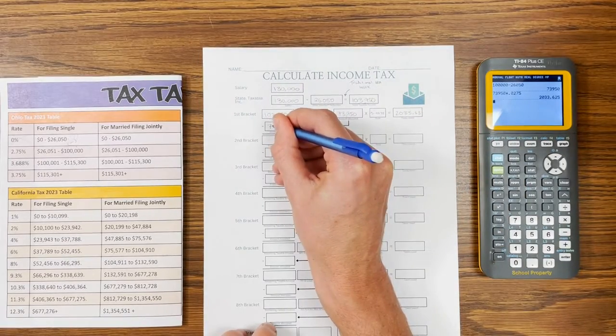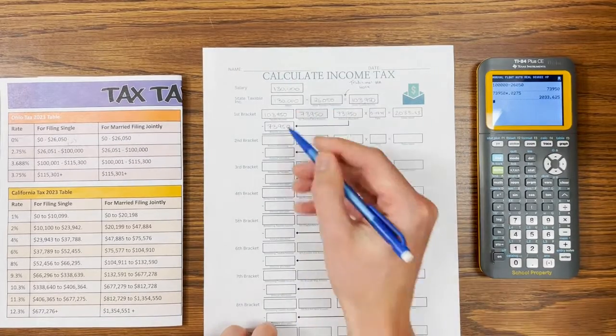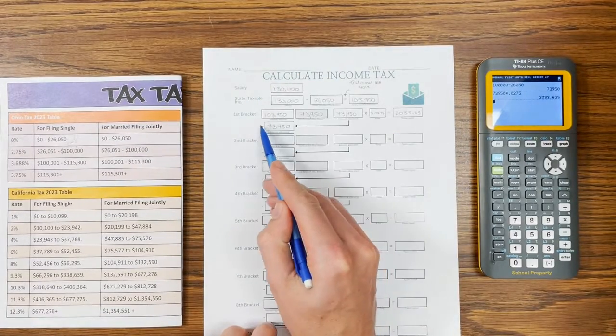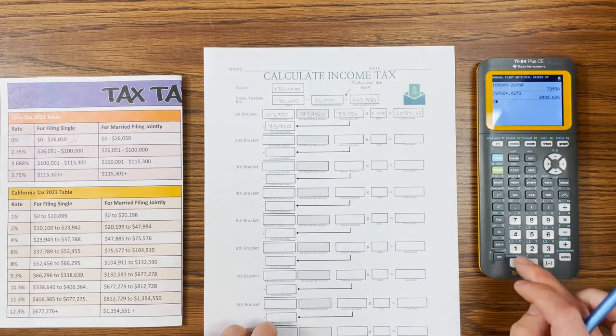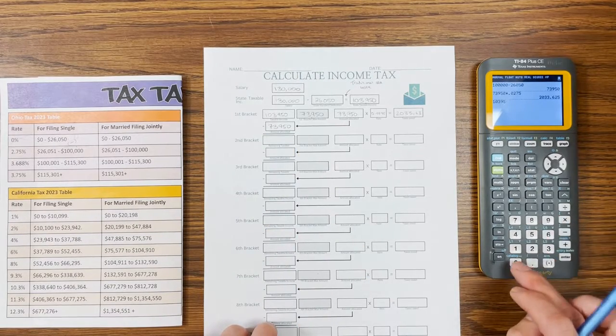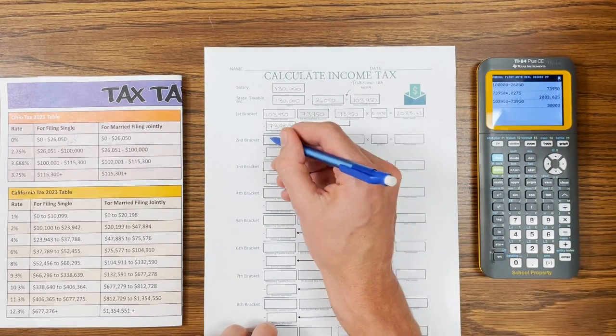Now we've taxed $73,950. We don't want to pay taxes on that again. So we're going to subtract that from our taxable income. That's why there's the little subtraction and equation line. So 103,950 minus 73,950. And we have an even $30,000 left.